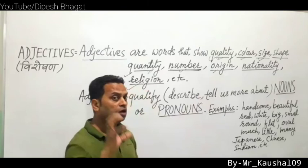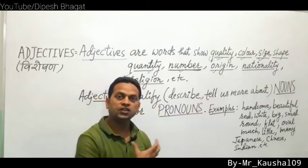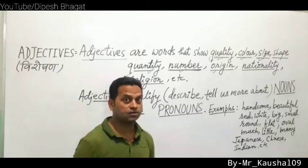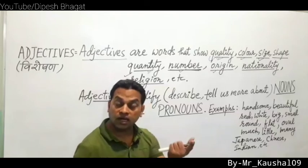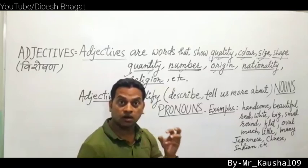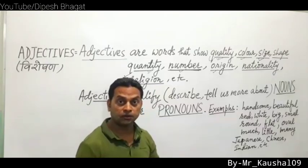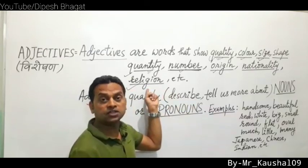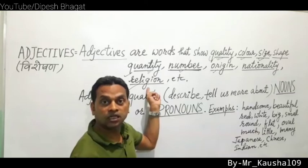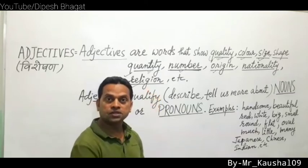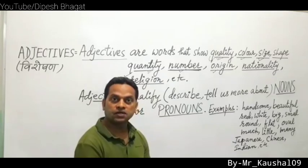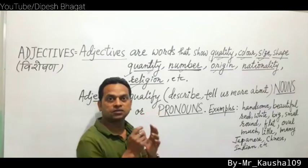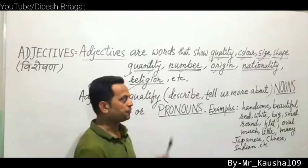Religion adjectives: words that show religion. Hinduism is a noun (words ending in -ism are nouns). But Hindus, Muslims, Buddhists, Christians — these are adjectives showing religion. People following Hinduism are Hindus; following Islam are Muslims; following Buddhism are Buddhists; following Christianity are Christians. These are adjectives.